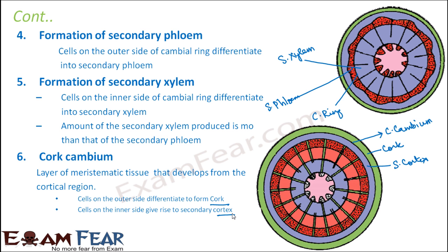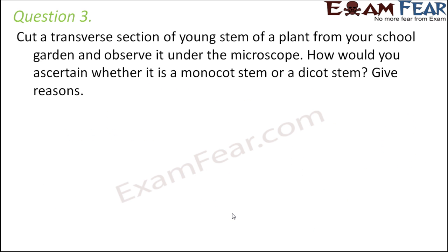This is the entire process of secondary growth in dicot stems. The next question: cut a transverse section of a young stem of a plant from your school and observe it under a microscope. How will you ascertain whether it is a monocot stem or a dicot stem? Think about the vascular bundles.